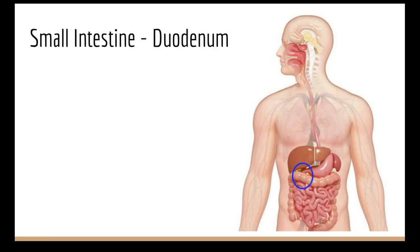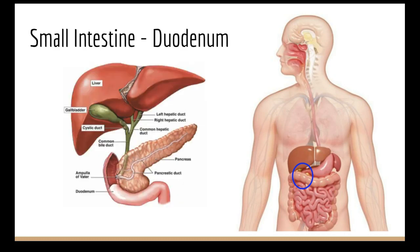Now we have the small intestine. The first section is called the duodenum, and this is basically where everything gets broken down. Besides the little bit of salivary amylase and pepsin already released, this is where all the enzymes are doing their work — this is the money maker of digestion.